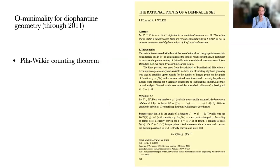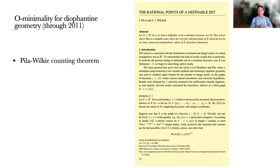The first paper that really had an impact on this subject was the work by Jonathan Pila and Alex Wilkie, in which they proved a counting theorem for rational points in definable sets in o-minimal structures on the real numbers. The counting part has to do with seeing how many rational points you have if you order them by their height. The height of a rational number is the maximum of the size of its numerator or its denominator when written in lowest terms.